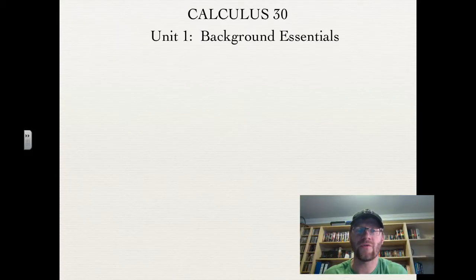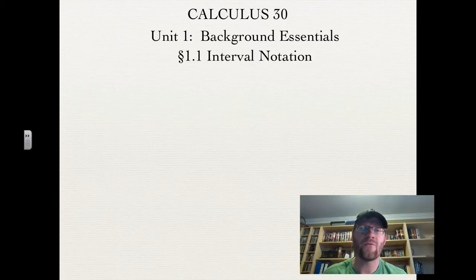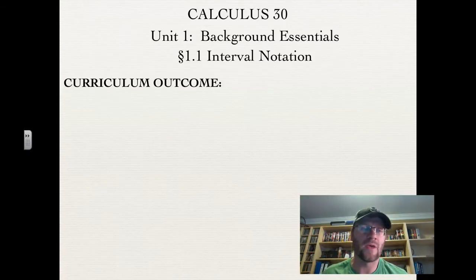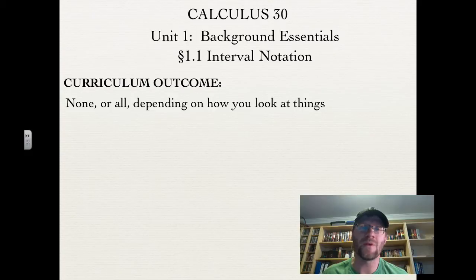We're in Calculus 30 and our first unit is called Background Essentials. It'll cover everything that we need to know for the rest of the course. Our first topic is something called Interval Notation, that's 1.1. There isn't a specific curriculum outcome, or you could consider it filling all the curriculum outcomes because we need this as a basis for the rest of the course.